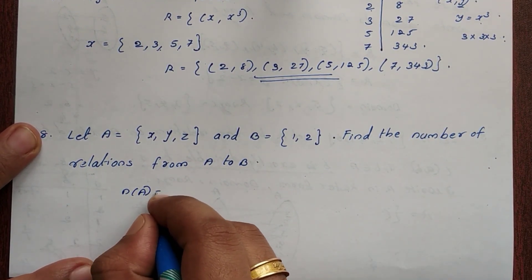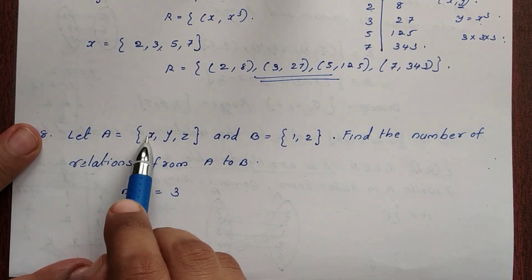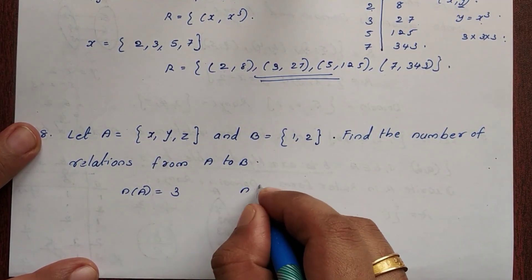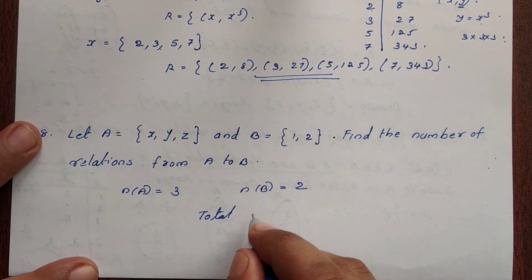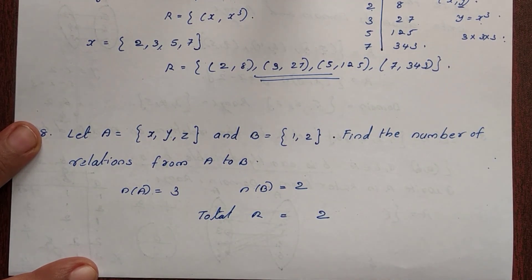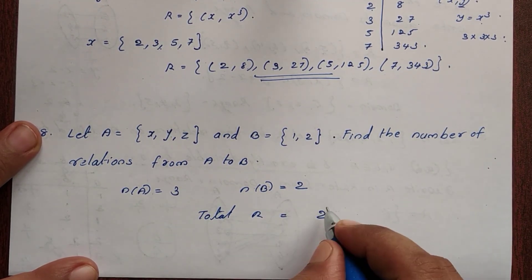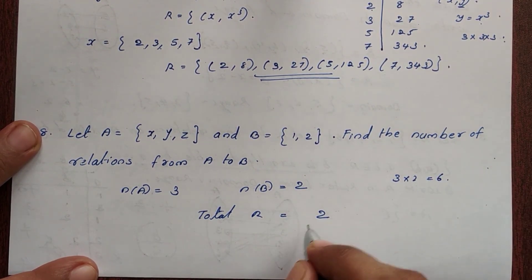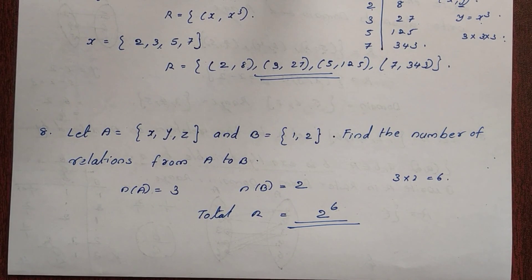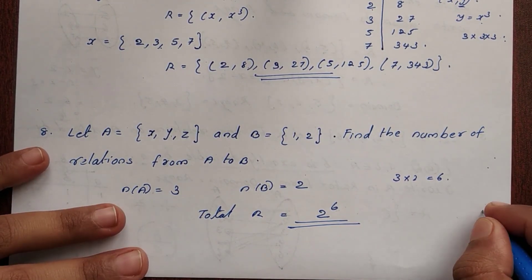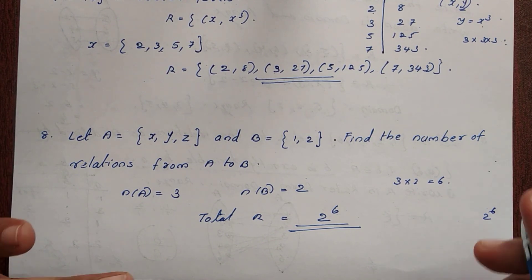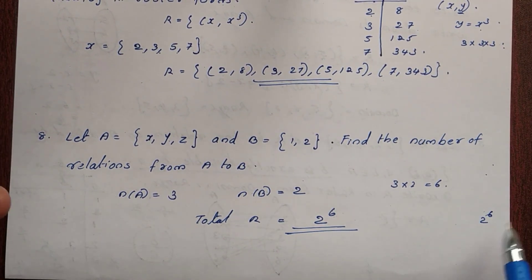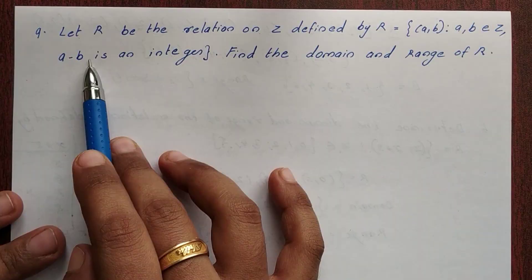The number of elements in A is 3, and the number of elements in B is 2. So the total number of relations is equal to 2 raised to the power of (3 × 2), which is 2 raised to 6. Each relation is a subset of A × B.